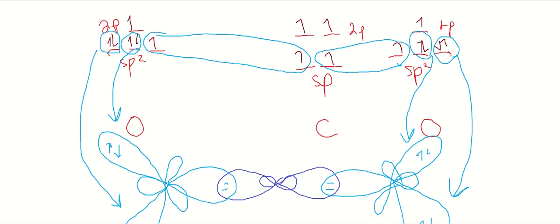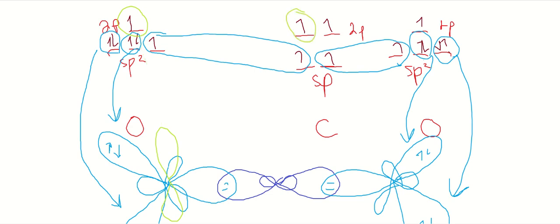Now let's take care of the double bonds — we'll do this in a different color. Oxygen only has one more p orbital left. The trigonal planar arrangement is all on one plane going through your screen horizontally. That p orbital is going to form a side-to-side bond with carbon's p orbital. Side-to-side bonding is called a pi bond.